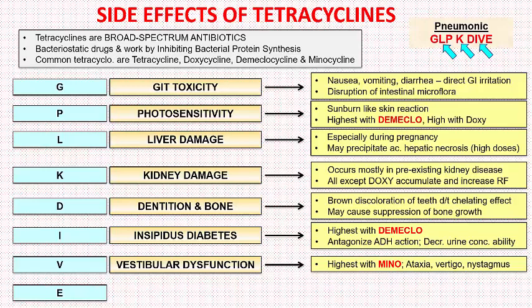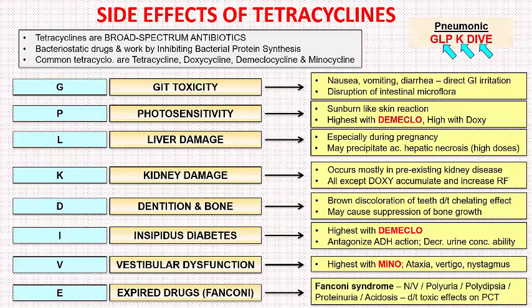Last, we have the letter E. We can remember E as expired drug causes Fanconi's syndrome. Fanconi's syndrome is characterized by nausea, vomiting, polyuria, polydipsia, proteinuria, etc., and has been observed in patients taking outdated and degraded tetracyclines. It probably occurs due to the toxic effects of degradation products on the proximal convoluted tubules. Therefore, outdated tetracyclines should never be given to patients.